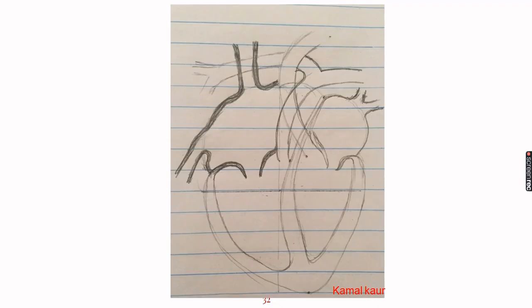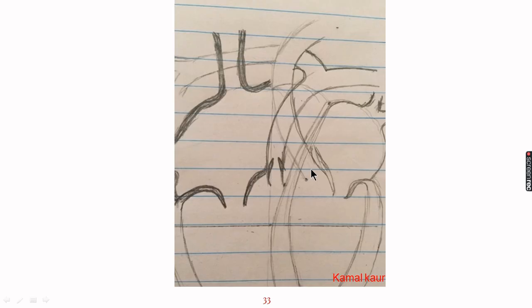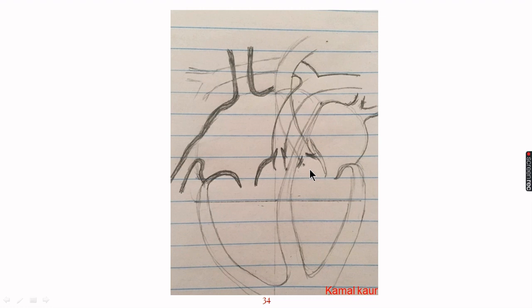The arteries associated with the heart also have valves, so we will draw valves in the pulmonary artery pointing in the upward direction, and also in the aorta pointing in the upward direction. With this, we have drawn each and every part of the heart, but the diagram is looking untidy.